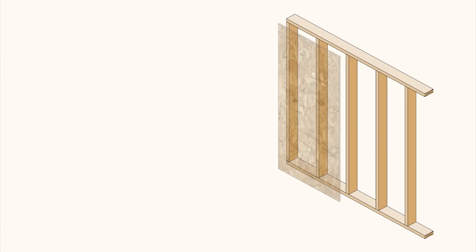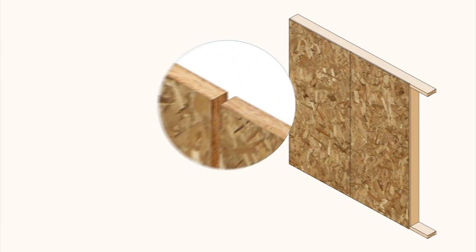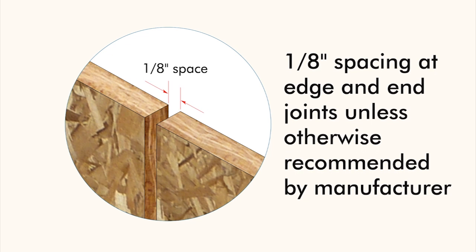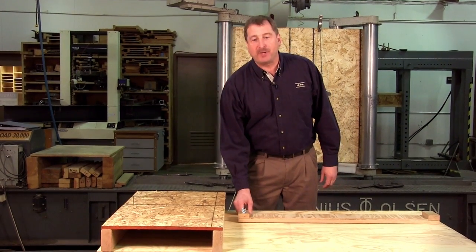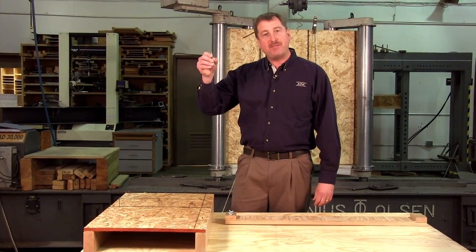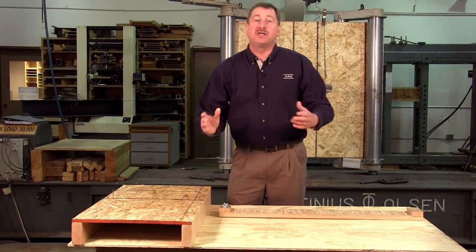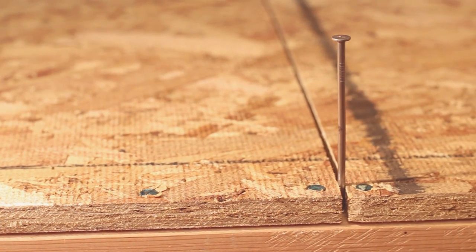To ensure best performance when installing plywood or OSB sheathing, APA recommends that you leave a 1/8 inch space between all panel edge and end joints unless otherwise recommended by the manufacturer. An easy way to determine proper spacing between panels is simply to place a 10-penny box nail between the panels. This will provide a 1/8 inch space every time with no need to measure.